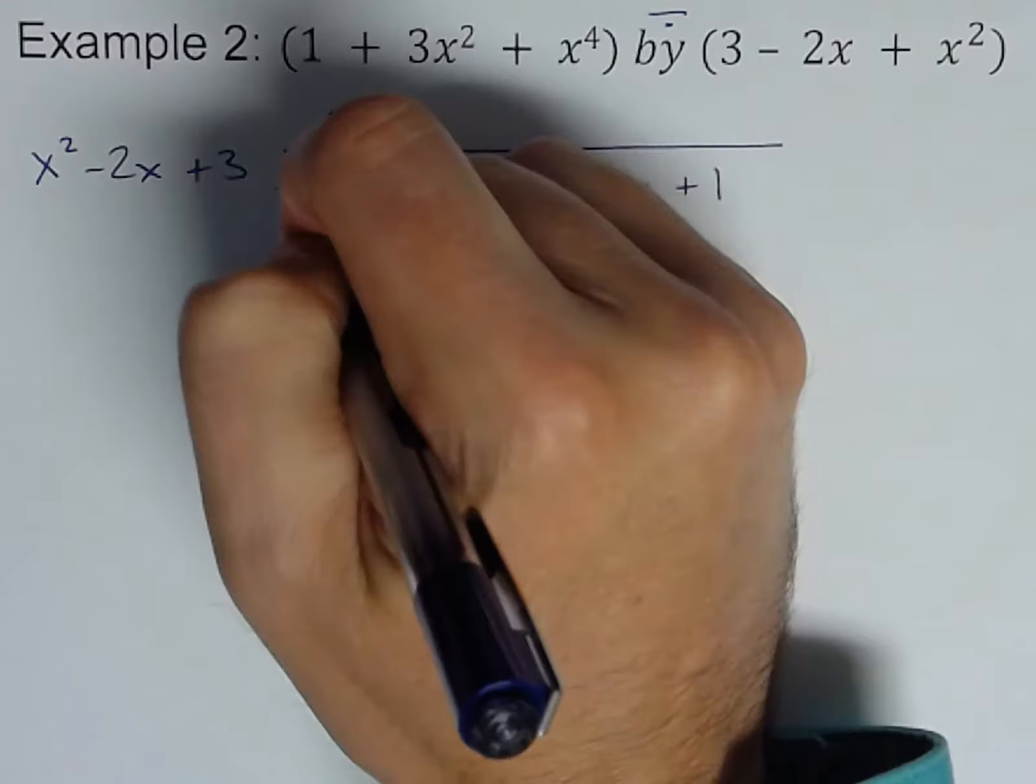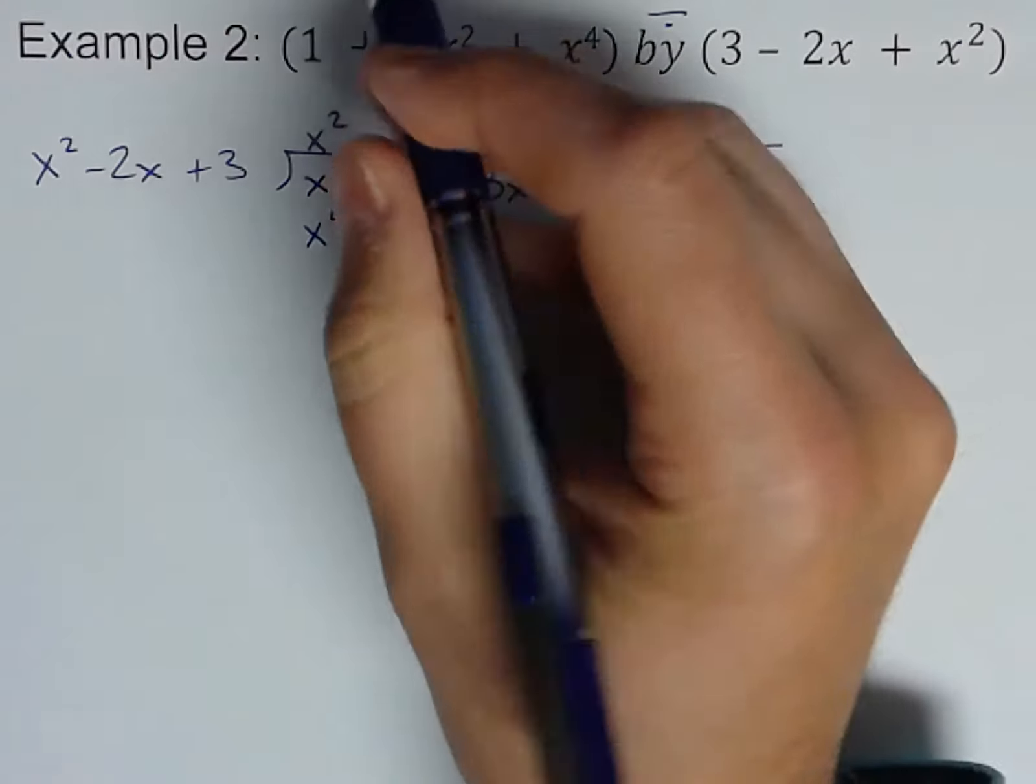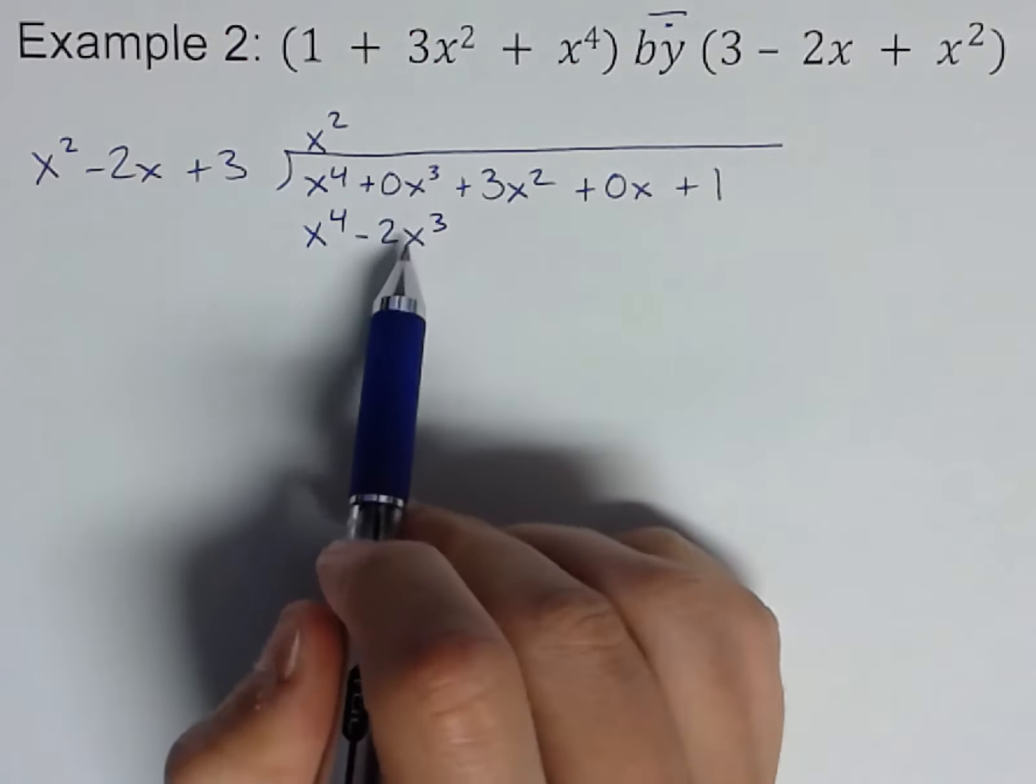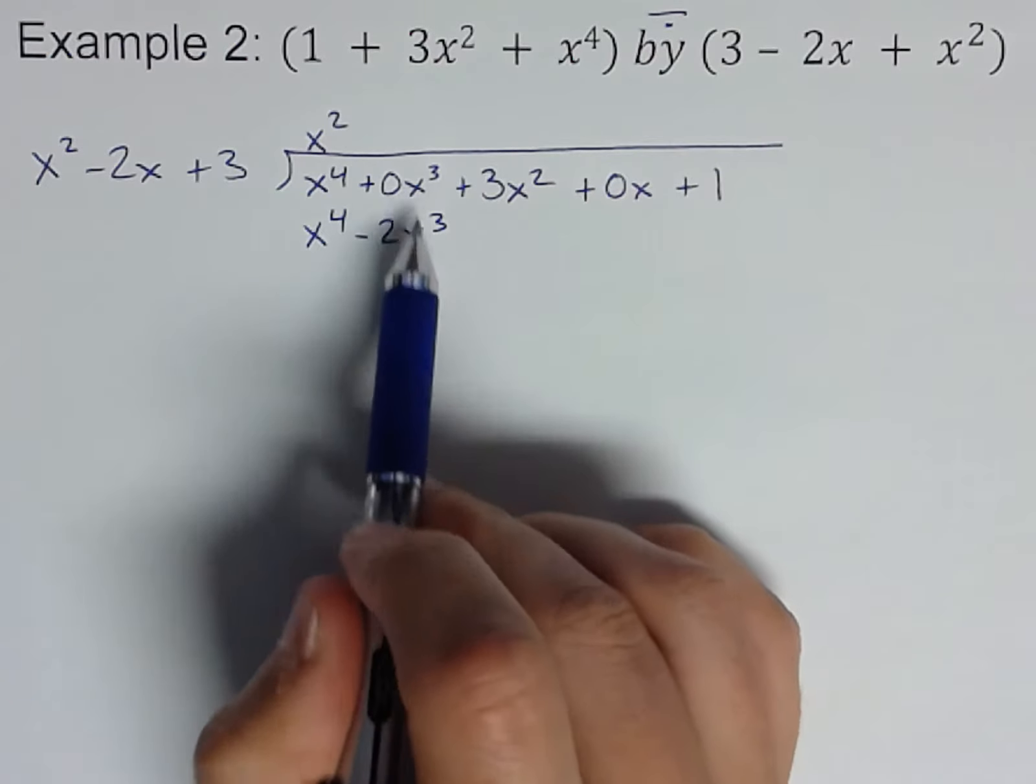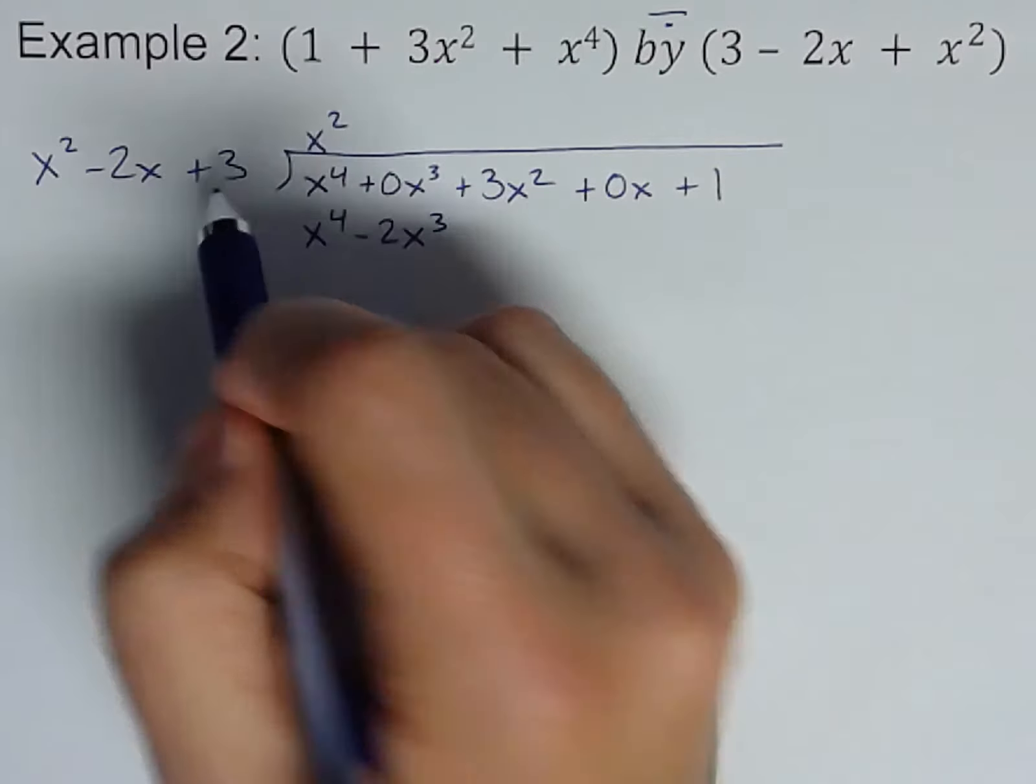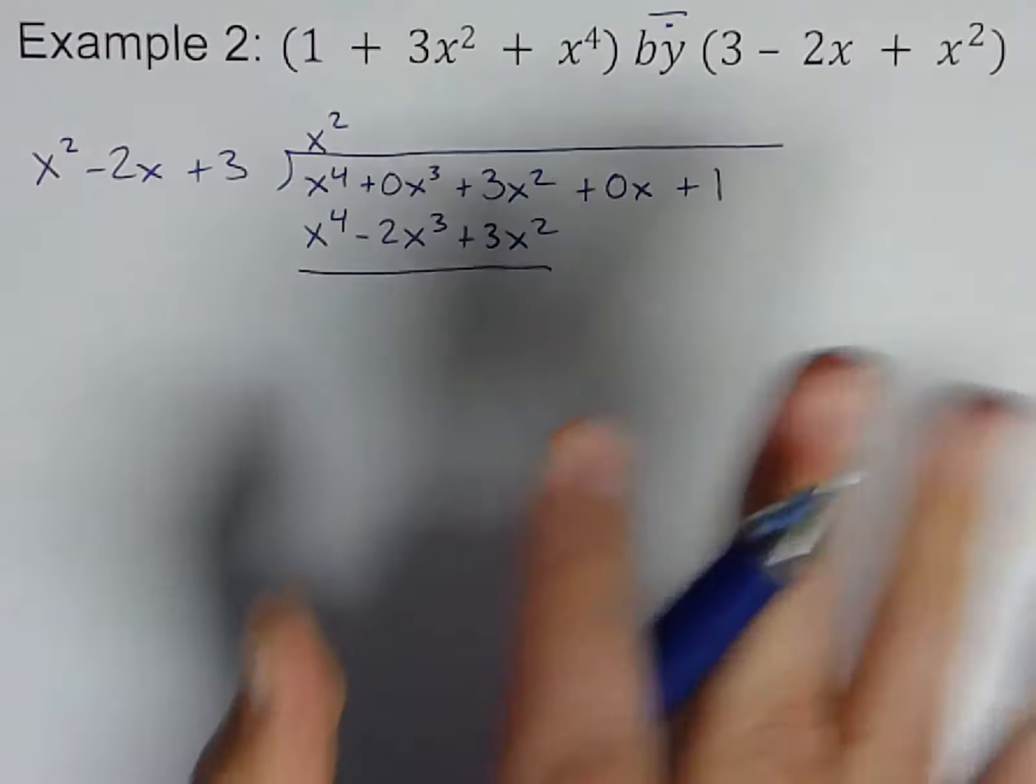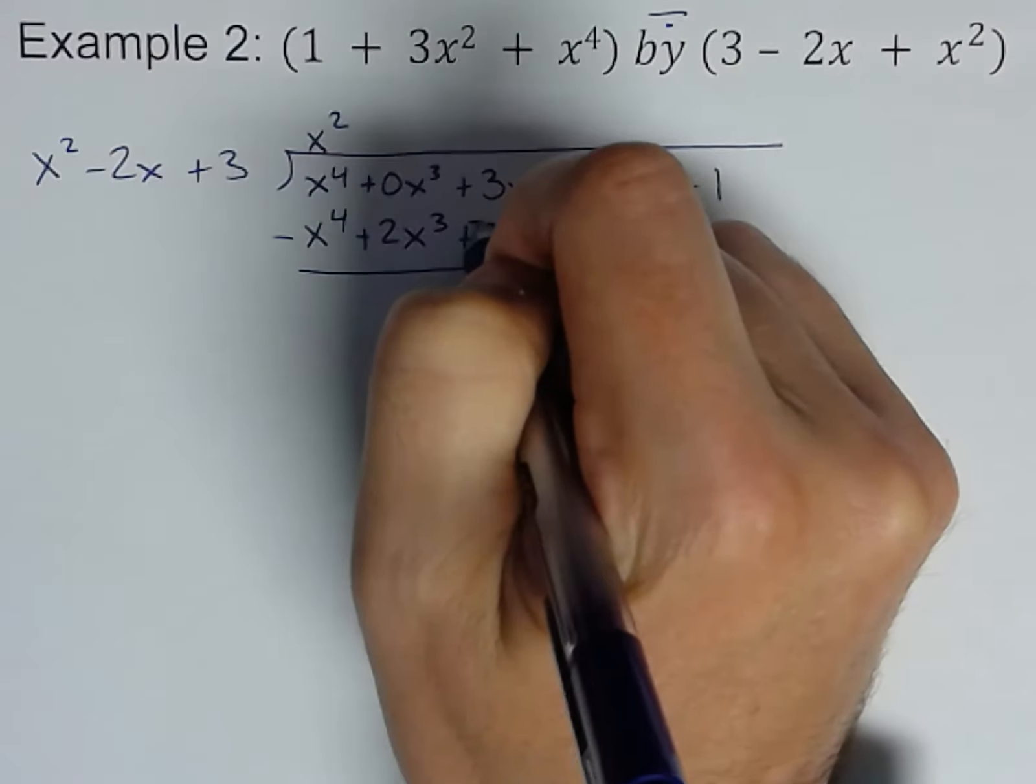x squared there, and remember we're going to multiply this through this whole thing. So x squared times x squared is x to the fourth. x squared times negative 2x is minus 2x cubed. Notice that's why we wrote that x cubed there, so things line up. Otherwise this x squared would be here, you go to subtract in the next step and it wouldn't make sense, they wouldn't be like terms. x squared times 3 is plus 3x squared.